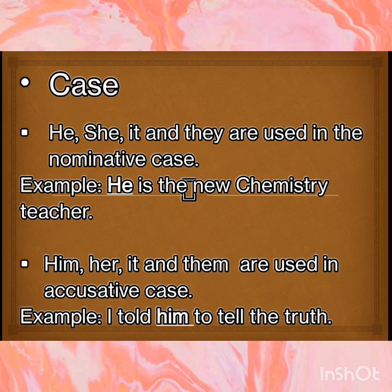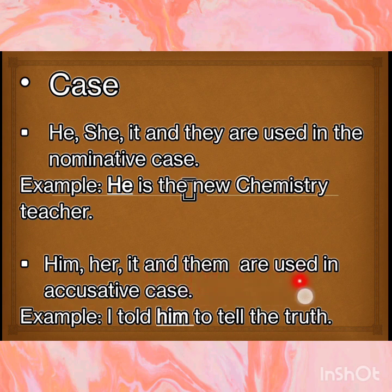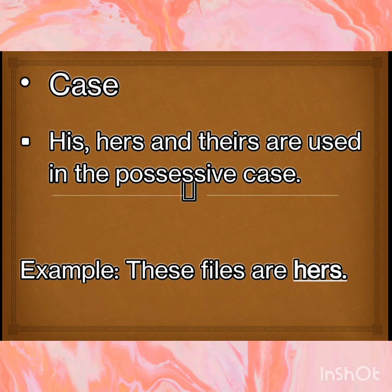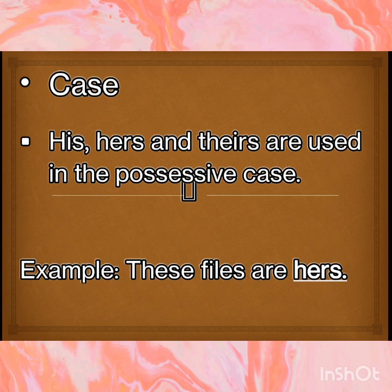He, she, it and they are used in the nominative case. Example: He is the new chemistry teacher. He, her, it and them are used in the accusative case. Example: I told him to tell the truth. His, hers and theirs are used in the possessive case. Example: These files are hers. These files are his. These files are theirs. So all three will be used for possessive case.